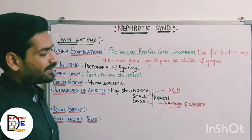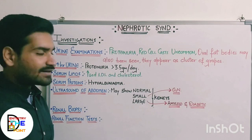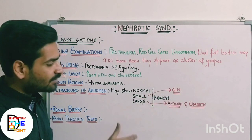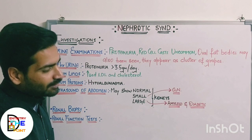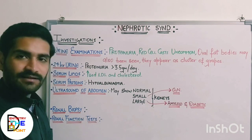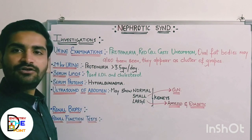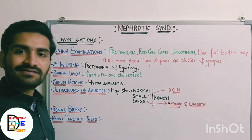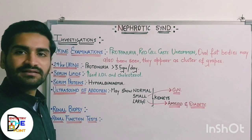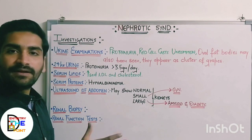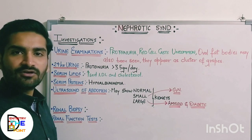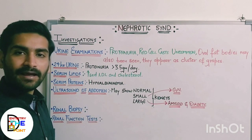Fifth, ultrasound of the abdomen may show normal, small or large kidneys. Small kidneys are seen in conditions like glomerulonephritis, while large kidneys are seen in metabolic conditions such as amyloidosis and diabetic nephropathy. Renal biopsy is done to assess prognosis and treatment response. Lastly, renal function test results are usually normal, as there is not much depression of renal function in nephrotic syndrome.